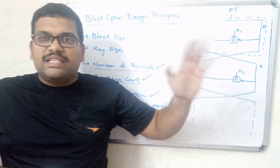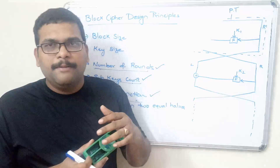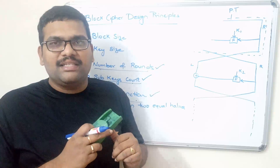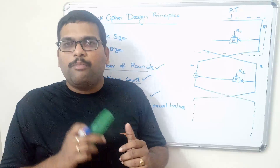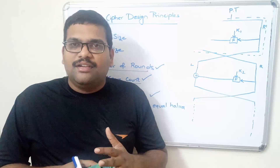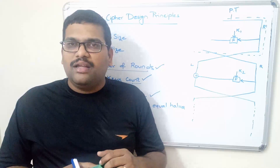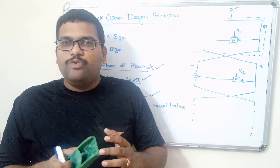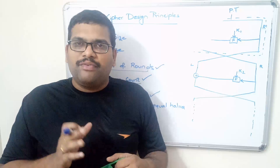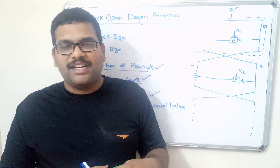This is all about the Feistel structure and the block cipher design principles. Hope you understood this concept. In the next session we will go with a very important algorithm — the DES algorithm, Data Encryption Standard — which is a block cipher symmetric algorithm. If you like my videos, share them with your friends and subscribe to my channel. If you have any doubts regarding network security, feel free to post your doubts in the comment section and I will definitely try to clarify them. Thanks for watching, and don't forget to subscribe. Thank you very much.